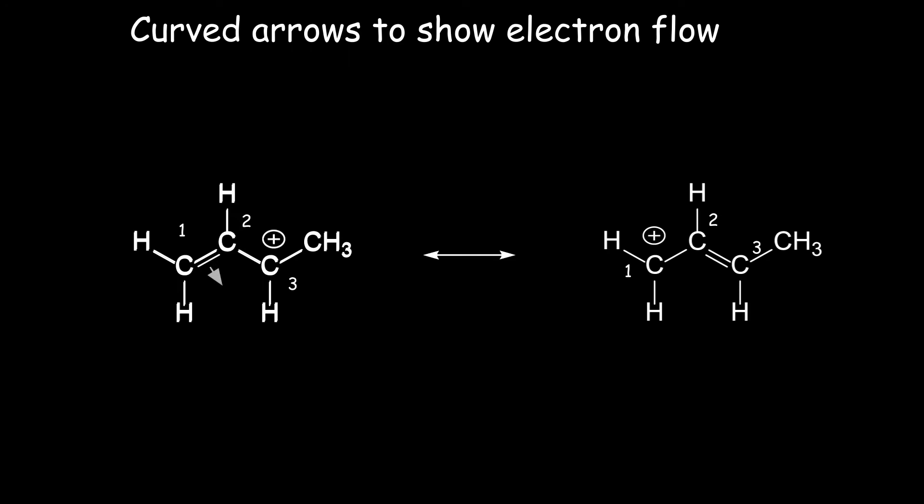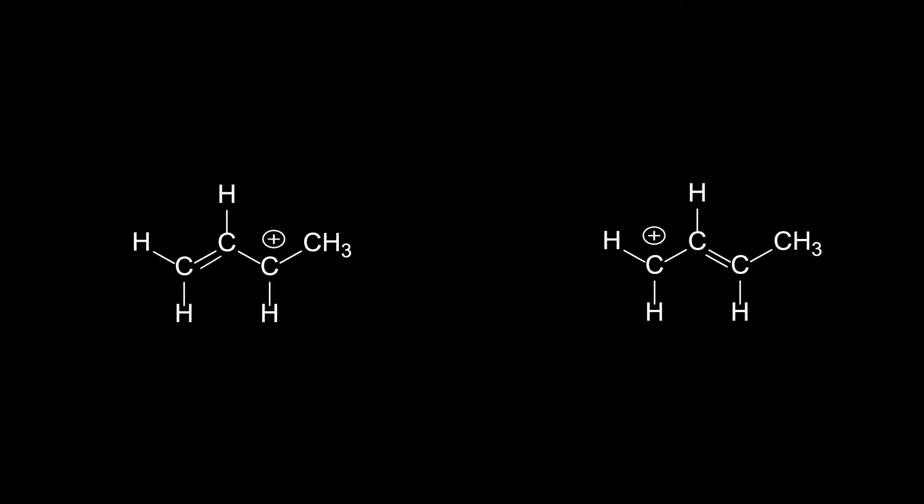On shifting, the formal charge is an arbitrary number that represents the number of electrons around the carbon atom. It does not pick up and shift. It is determined after the electron shift has occurred.